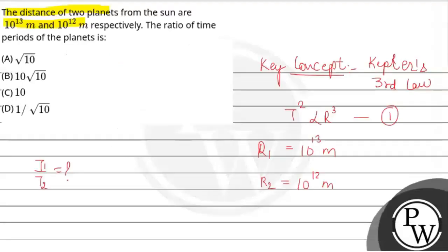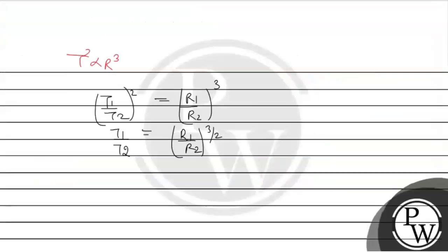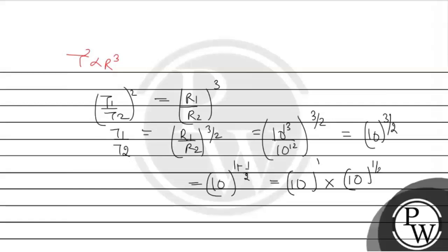Now, R1 hummhen given hai 10 to the power 13 and R2 is 10 to the power 12. So, putting this value 10 to the power 13 over 10 to the power 12 to the power 3 by 2. So, 10 to the power 12 leng 10 to the power 13 ko kata, we will get 10 to the power 3 by 2. Up 3 by 2 power 4, we will get 10 to the power 1 plus 1 by 2. Which means 10 to the power 1 multiply by 10 to the power 1 by 2.